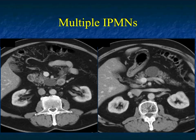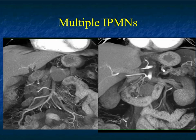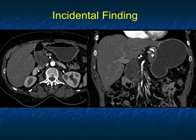We can also see multiple IPMNs of varying sizes. Here's a case with a lesion in the uncinate process, body, and tail of the pancreas. It's not uncommon to see multiple lesions, and you have to look at each one. If you have four IPMNs, is it four times the risk of one? The answer is no — the risk tends to be the same. But you have to carefully follow each lesion, as one may be more suspicious than another.